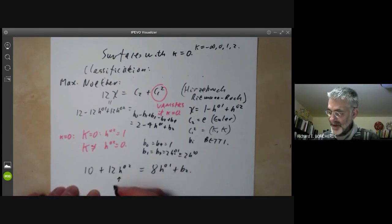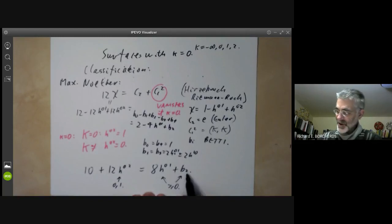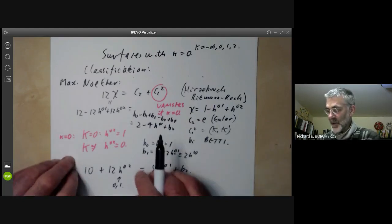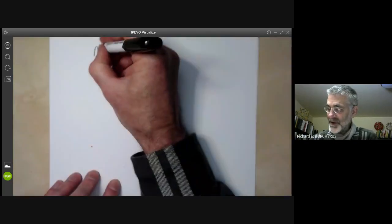If we look at this, we can rewrite it as follows: 10 plus 12H⁰² equals 8H⁰¹ plus B₂. And this number here is zero or one, and these two numbers are both greater than or equal to zero. So there are only a finite number of possibilities of solutions for this equation.